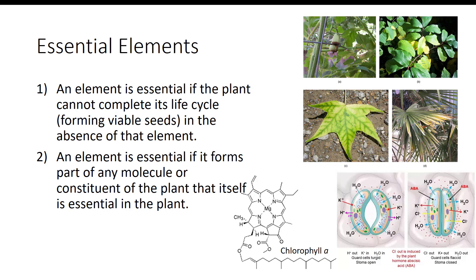There are 17 essential elements required by most plants for normal plant growth and development. The three major elements used by the plants are carbon from carbon dioxide and hydrogen and oxygen from water. In addition to carbon, hydrogen, and oxygen, 14 other essential inorganic nutrients are required for plant growth and are obtained from the soil.